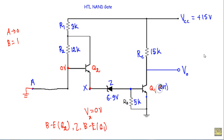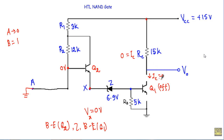As Vx will be equal to zero, transistor Q1 will be in OFF state. With Q1 off, its collector and emitter terminals act like an open switch, so I can disconnect them from the circuit. Therefore collector current IC equals zero, ICRC drop equals zero, and there is no voltage drop across RC. Our output voltage will be +15V. Since any voltage greater than 3V is logic 1, this indicates logic 1 for input combination 0,1.